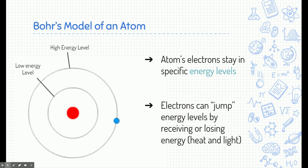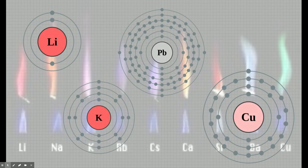Electrons typically stay in their energy levels, but can jump if they receive and lose energy in the form of heat or light. In fact, many of you are going to do a lab called the flame test, and you're going to see that kind of happening. The flame test gives evidence for the Bohr model of an atom and electron energy level jumps. The different flames shown by different elements are because electrons are jumping up and down between energy levels.